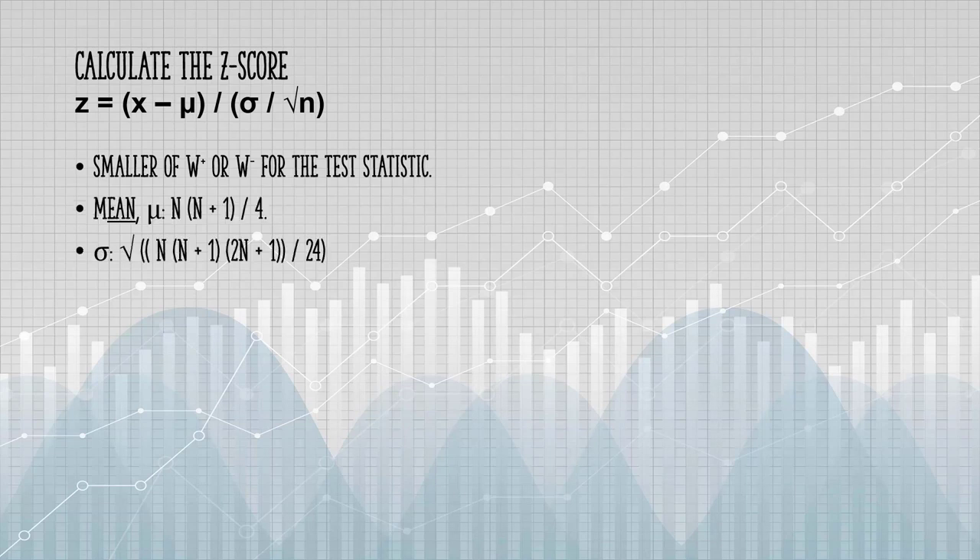Here's our z-score formula. The x, our test statistic, is going to be the smaller of the W values again. That was 7. And here are the formulas for the mean and the standard deviation. We do have one tied rank, so we're going to have to use this formula to reduce sigma. That means we're going to reduce sigma by 0.125.